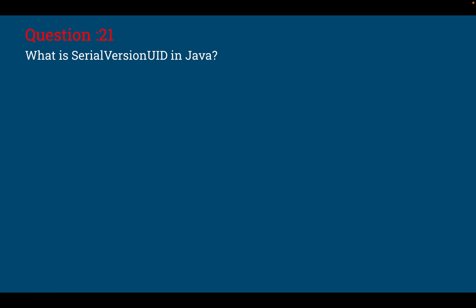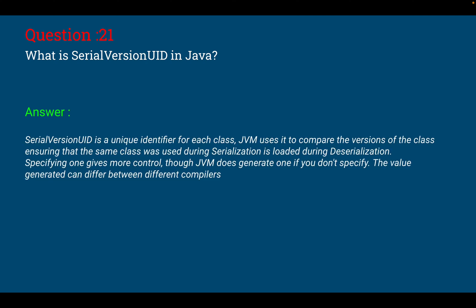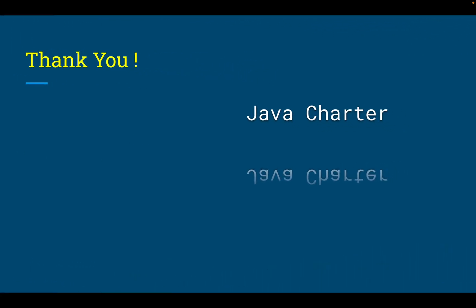Question number 21, the last question from the interviewer: what is serialVersionUID in Java? SerialVersionUID is a unique identifier for each class. The JVM uses it to compare versions of the class, ensuring that the same class was used during serialization and is loaded during deserialization. Specifying it gives more control; otherwise the JVM generates one, but the generated value can differ between different compilers. It is better to provide your own serialVersionUID. Thank you all from Java Charter — I hope this interview series is helpful. See you, bye bye.